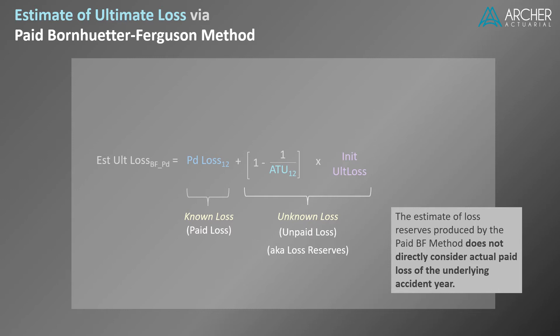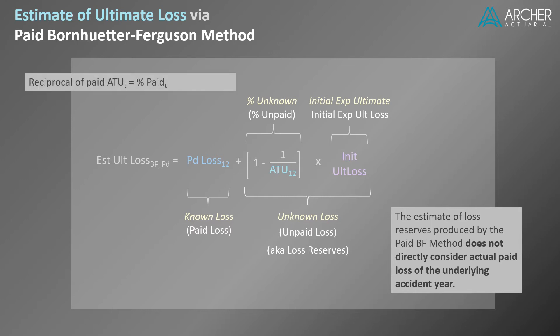Let's look more closely at the two terms in the unknown loss section. Generally, these can be described as the percent unknown and the initial expected ultimate. For the paid version of the method, this equals the expected percent unpaid times the initial expected ultimate loss. The reciprocal of the paid age-to-ultimate factor equals the percent paid. One minus this amount equals the percent unpaid.